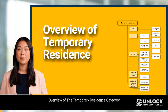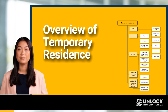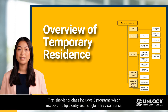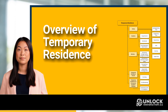The Temporary Residence Category consists of four major classes. First, the visitor class includes six programs: Multiple Entry Visa, Single Entry Visa, Transit Visa, Electronic Travel Authorization (ETA), No Visa, and Super Visa.